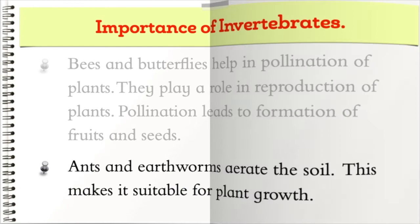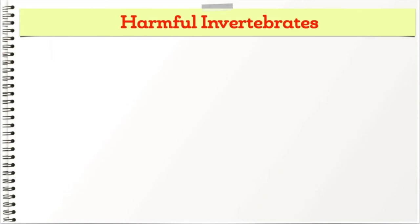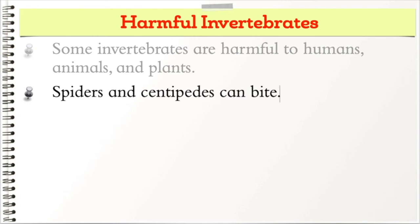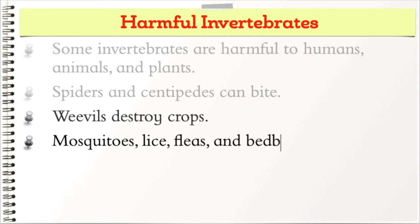Some invertebrates are harmful to humans, animals, and plants. Spiders and centipedes can bite, and weevils destroy crops. Mosquitoes, lice, fleas, and bedbugs are harmful to animals and human beings. Ticks, tapeworms, and some types of mites affect both humans and livestock.